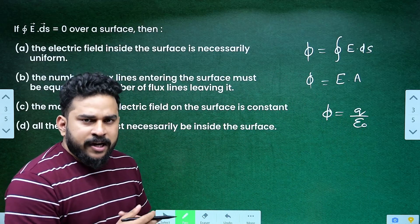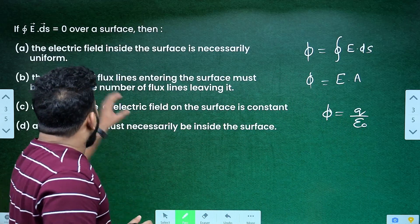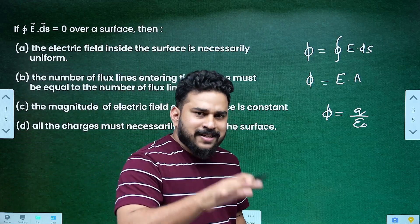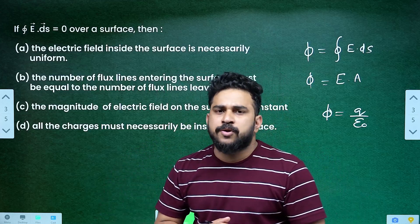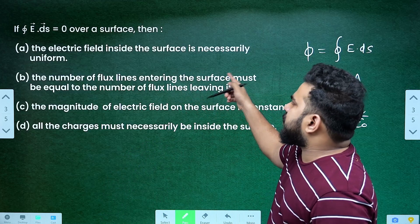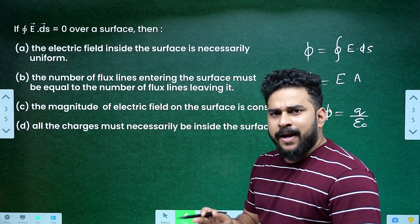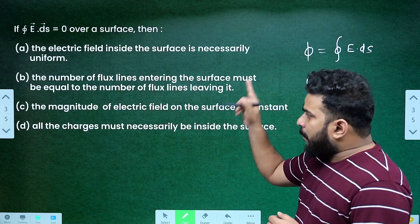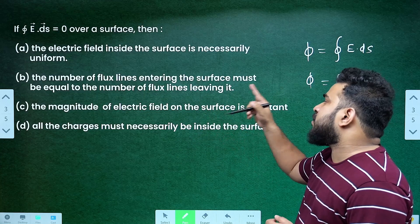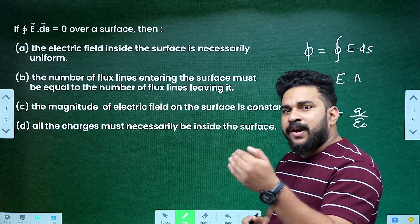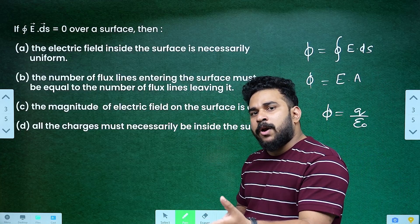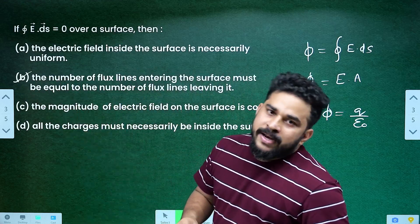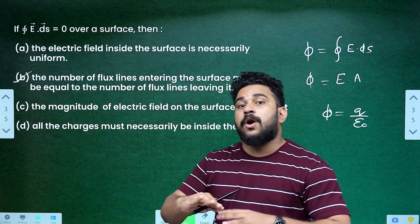If you want to show close integral E dot ds is equal to zero over a surface, then the condition is satisfied if the number of flux lines entering the surface must be equal to the number of flux lines leaving it. Inward flux is taken to be negative, outward flux is taken to be positive, so total flux is zero.